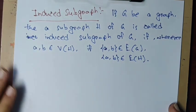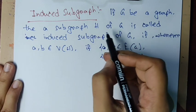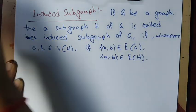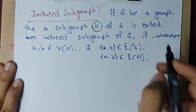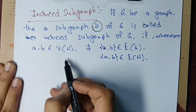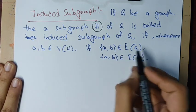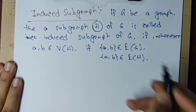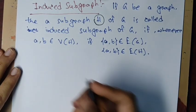If G be a graph, then a subgraph H of G is called an induced subgraph if for any two vertices A, B in H, if the edge AB is in the edge set of G, then it will also be in the edge set of H. We will see this through examples.